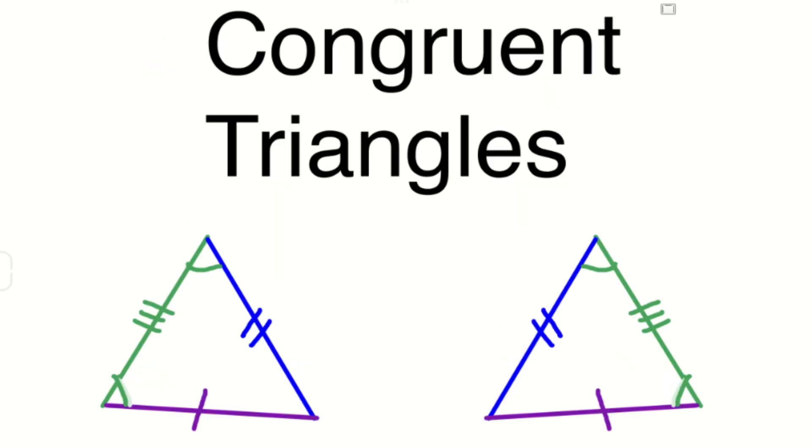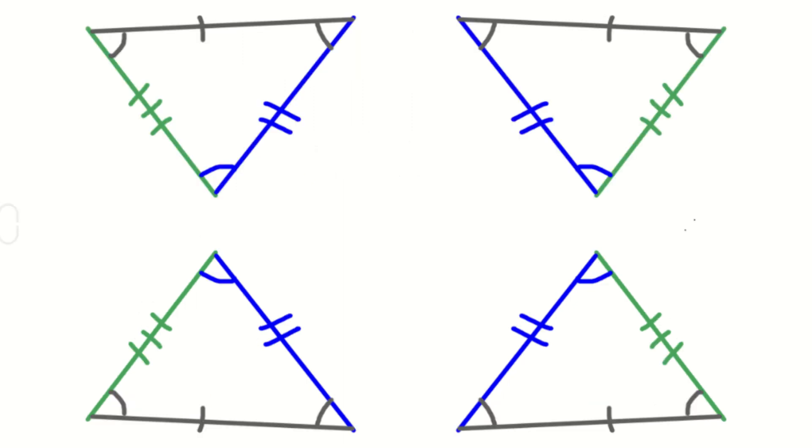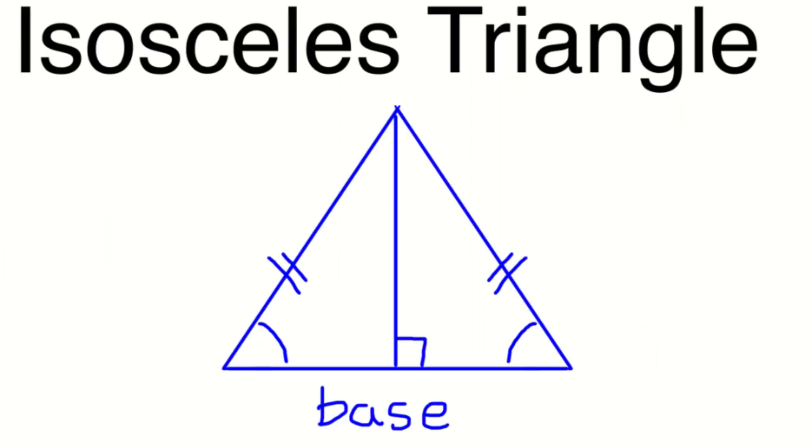Next, congruent triangles. Congruent means equal. Two triangles are said to be congruent if all the sides and angles of a triangle are equal to the corresponding sides and angles of its congruent triangle. Orientation doesn't matter for congruency. Isosceles triangle. The rule for an isosceles triangle is that the triangle must have two sides of equal length. These two sides are called the legs of a triangle, and the unequal side is called the base.